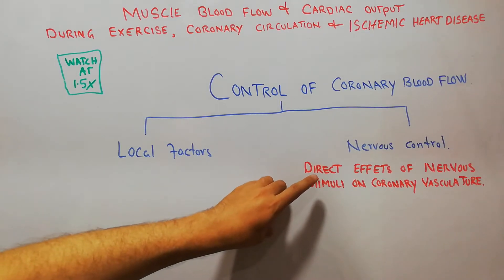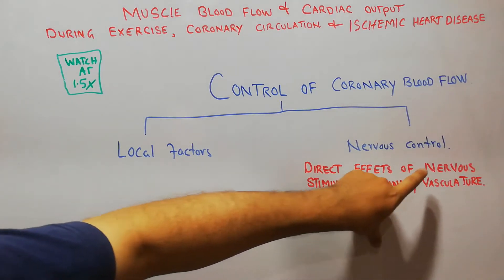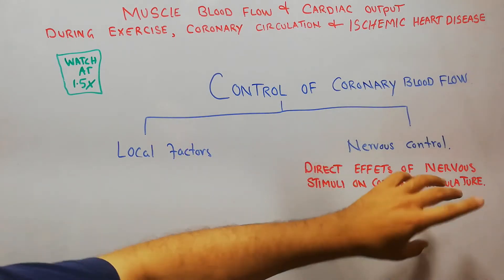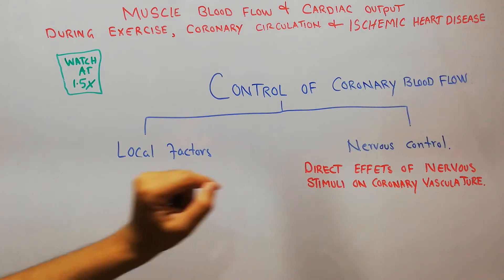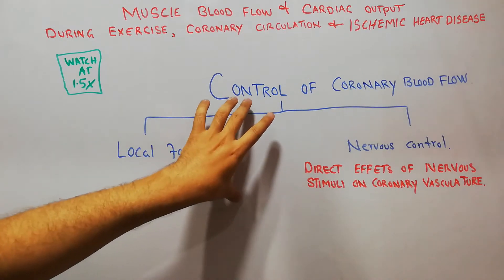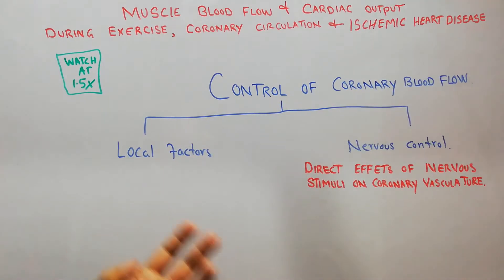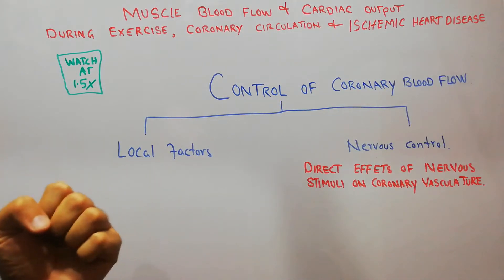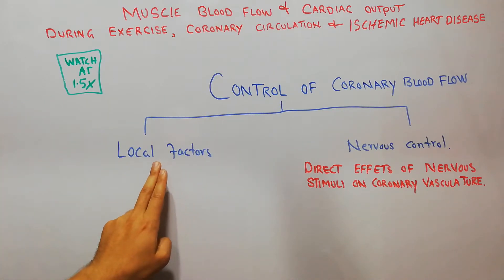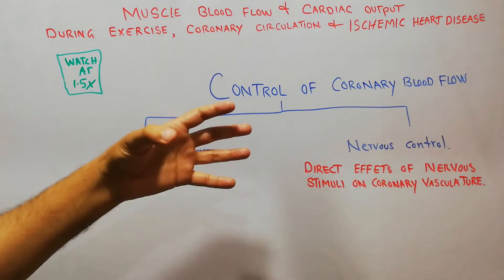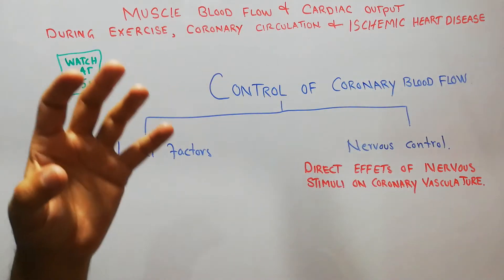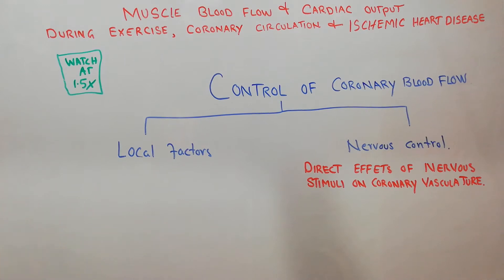In this lecture we are going to talk about the direct effects of nervous stimuli on coronary vasculature. What are the direct effects of nervous stimulation on coronary vasculature? As we are discussing the coronary circulation, in our last lecture we discussed the control of coronary blood flow, or the control of blood flow to the heart muscles.